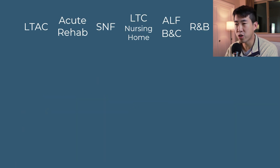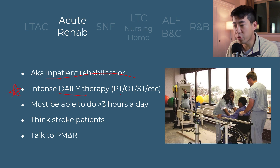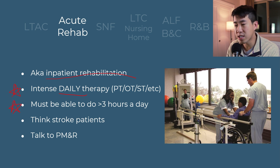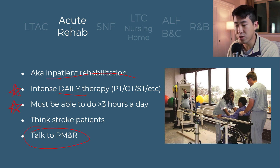Next, let's talk about acute rehab, also known as inpatient rehabilitation. These are for patients who really require intense daily therapy, whether that's physical therapy, occupational therapy, speech therapy, etc. The caveat is that they need to be able to do at least three hours of rehab a day. If they are not able to tolerate that amount of rehab, they do not qualify for acute rehab. A lot of times it's going to be stroke patients. To send patients to acute rehab, you generally need to talk to the physiatrist at PM&R to see if the patient qualifies.